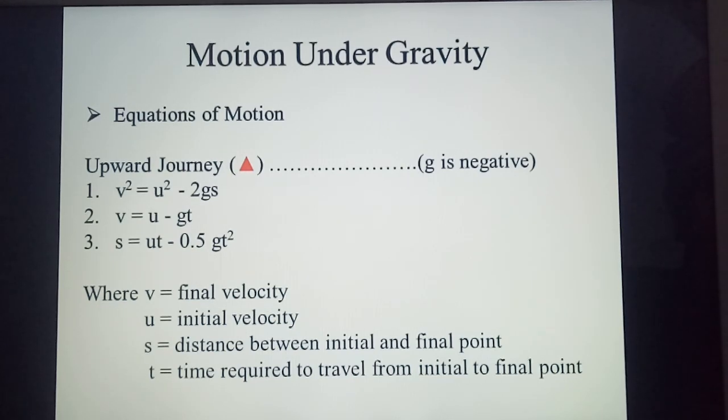Where v will be final velocity, u is initial velocity, s is the distance between initial and final point, and t is the time required to travel from initial to final point.